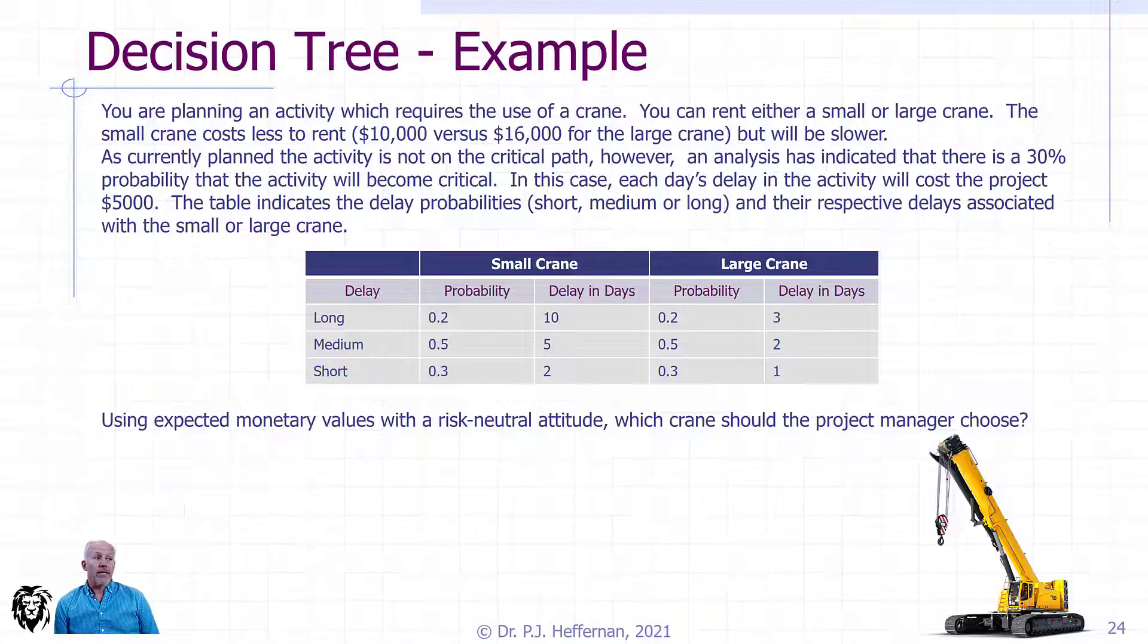As currently planned, the activity is not on the critical path. If it's not on the critical path, slight delays are not likely to affect the overall project. However, an analysis has indicated that there's a 30% probability that the activity will become critical, in which case any delays on that activity would delay the project. Each day's delay in the activity will cost the project $5,000.